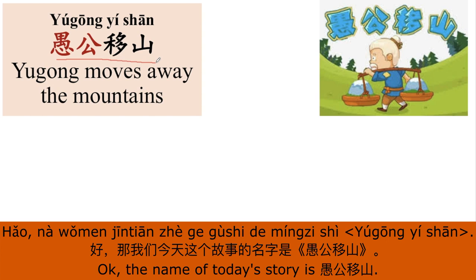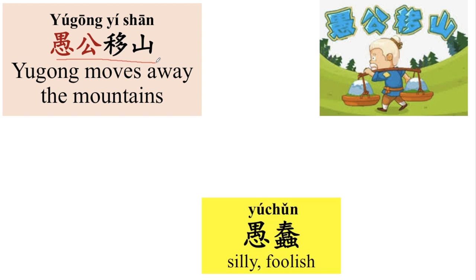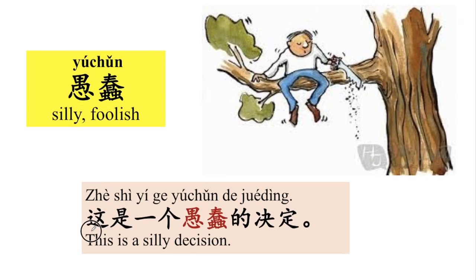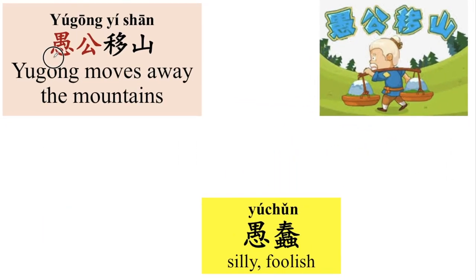愚公移山。Yugong moves away the mountains. 好，那愚，愚就是愚蠢。愚蠢 means foolish, silly. For example, I can say 这是一个愚蠢的决定。This is a silly decision. 愚公，愚 is the last name. 愚 means silly.